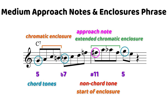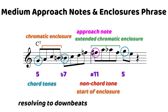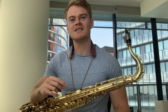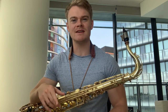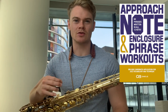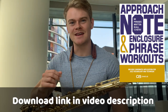Hopefully we are starting to see the patterns here — we are generally resolving to downbeats. In fact, in the last couple of phrases, we are only resolving to downbeats, those being beats one and three. Generally, we are putting chord tones on those beats as well, with the exception of beat one of measure two. You can find phrases like these and more through the keys in the approach notes and enclosure phrase workouts PDF package.